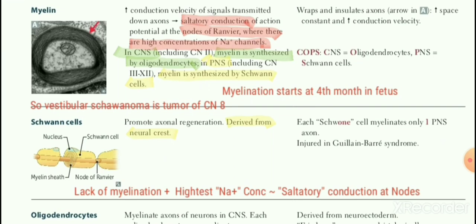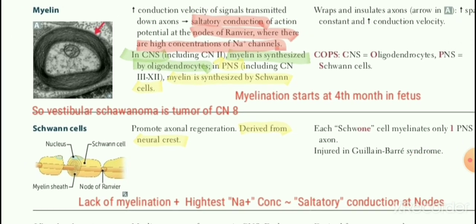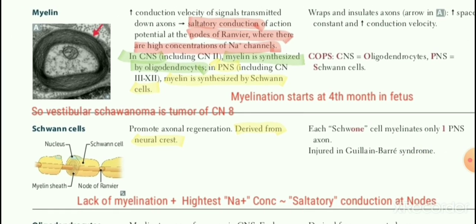A useful memory aid: the cranial nerve known as the vestibulocochlear nerve has a tumor called schwannoma, named because of the Schwann cells responsible for peripheral myelination. Otherwise, you can remember that oligodendrocytes are CNS cells, so myelination in the CNS is also by oligodendrocytes.